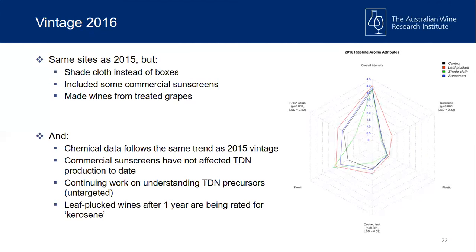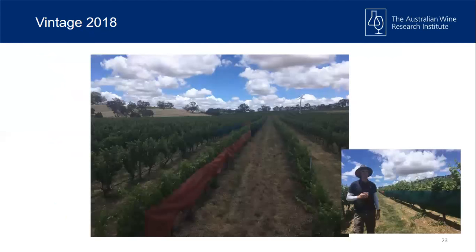The chemical data from 2016 follows the same trend as 2015 — higher TDN with more light, not much difference between the two sites. In 2017 we had a break, then in 2018 we came back to shade cloth. This time we rolled shade cloth down each side of the vine to shade the bunch zone — so grapes don't get light but the canopy still receives it. We also used different colors of shade cloth, because they let through different wavelengths, to start understanding which wavelengths are most important to block out.